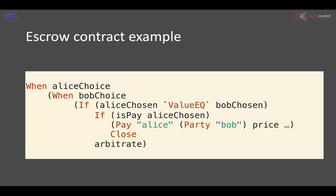What it says is: if Alice has chosen to make the payment, then we make a payment from Alice to the party Bob of the price. If Alice hasn't chosen to make a payment, the contract is just closed because nothing will happen, and any money that remains in the contract will be returned — in this case, the money will be returned to Alice.